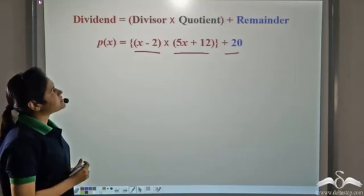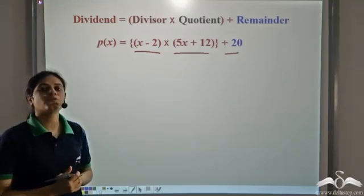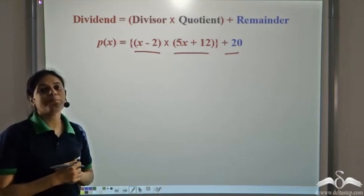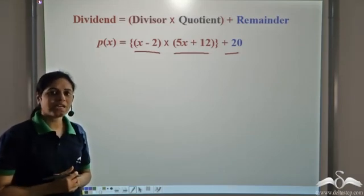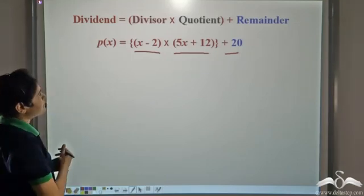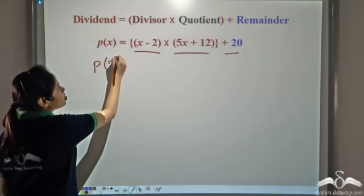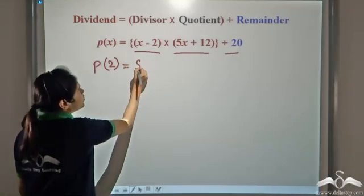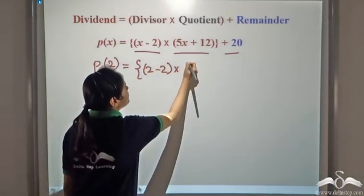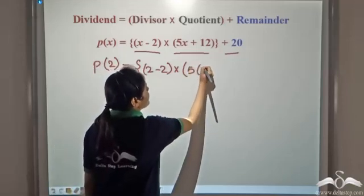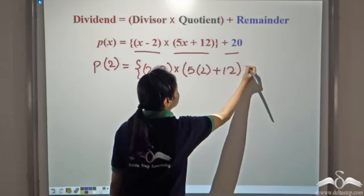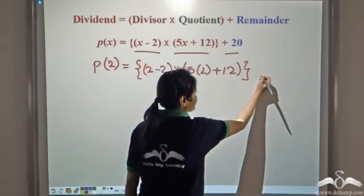Now let us substitute x is equal to 2. We will soon see why 2 is a magical number here. For now, substitute x is equal to 2. So we get P(2) is equal to 2 minus 2 into 5 into 2 plus 12, plus 20.